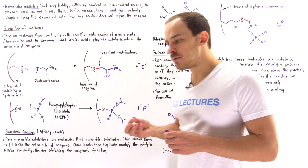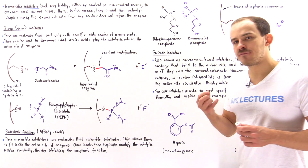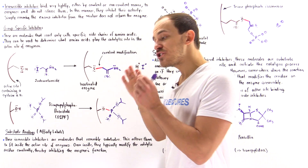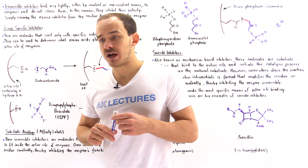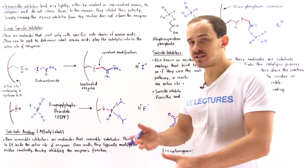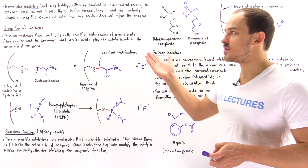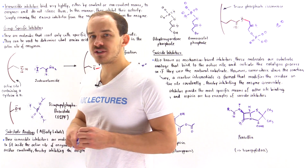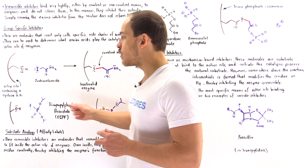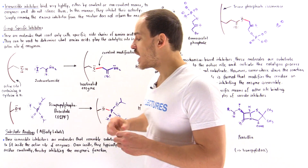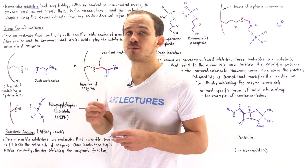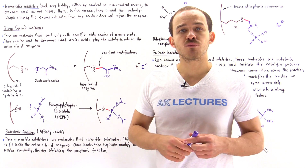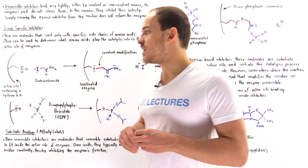A group specific inhibitor is an irreversible inhibitor that binds to and reacts with specific side chain groups of amino acids. On the board, we have two examples: iodoacetamide, which reacts with cysteine side chains, and diisopropyl phosphofluoridate (DIPF), which reacts with serine amino acids.